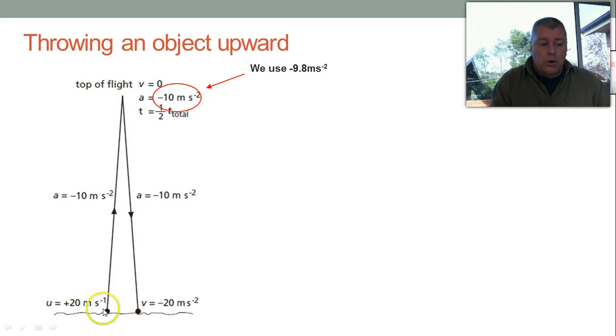So if you want the total flight, you just need to work out the time it takes to go up and then times it by two. And notice also that if we launch it at plus 20 meters per second, we would catch it at minus 20 meters per second, because the rate it slows down is the rate at which it speeds up on the way down. So it's all symmetrical.